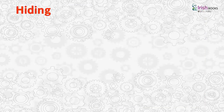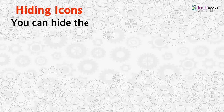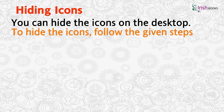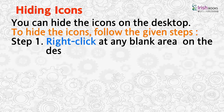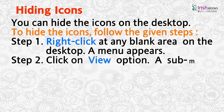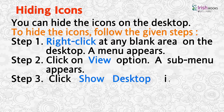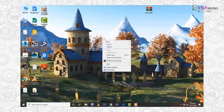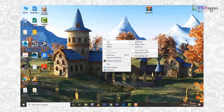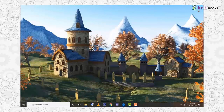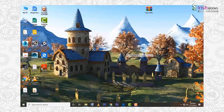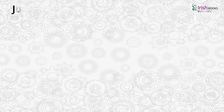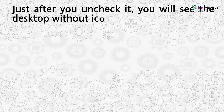Hiding icons: Step 1 — right-click any blank area on the desktop and a menu appears. Step 2 — click on the View option and a sub-menu appears. Step 3 — click Show Desktop Icons to uncheck it. Just after you uncheck it, you will see the desktop without icons.